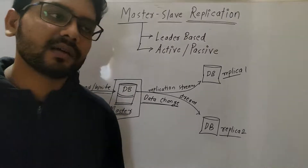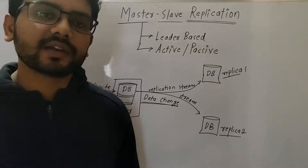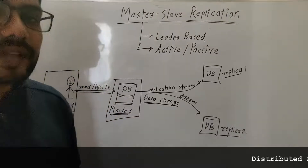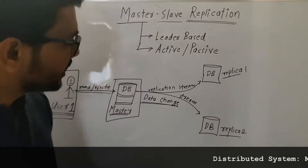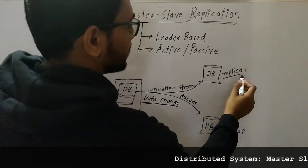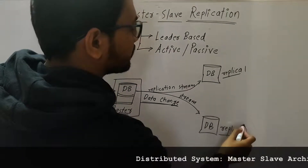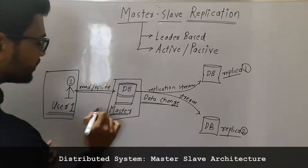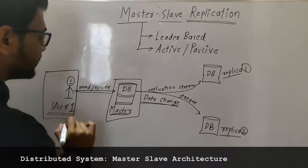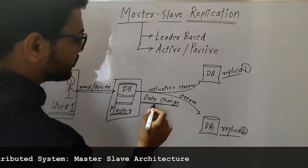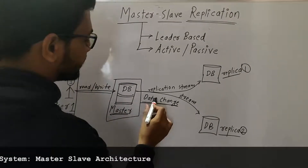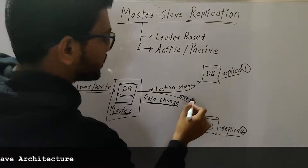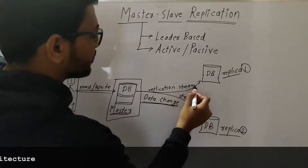All the read and write requests will go first to the database server which is called the master. The master database will then replicate all the data changes to their respective replicas. There can be multiple replicas — in this diagram you can see there are two replicas: replica 1 and replica 2. As soon as a user fires a write request to the master database and there is some data change, that change will get replicated to replica 1 and replica 2 via replication streams.